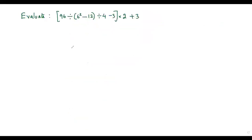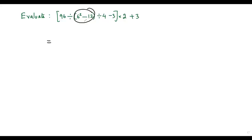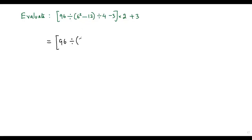Let's do another example. Here we have a numerical expression with two types of brackets — square brackets and circle brackets. We first consider the square bracket, but inside it there is a circle bracket, so we evaluate that first. Inside the circle bracket we have power and subtraction. We do power first: 6 squared is 36, so we get 96 divided by 36 minus 12 divided by 4, minus 3 times 2, plus 3.